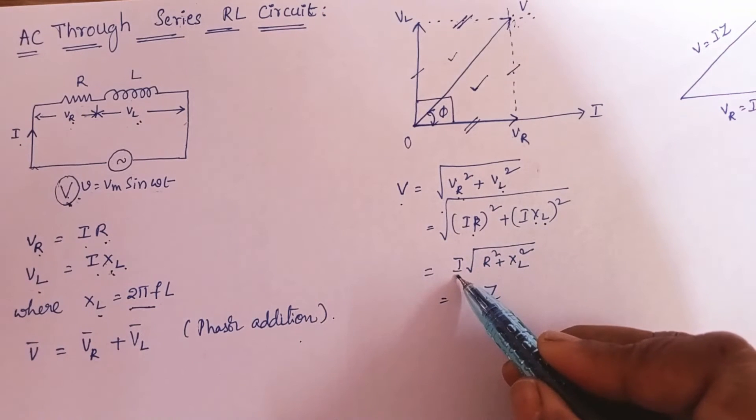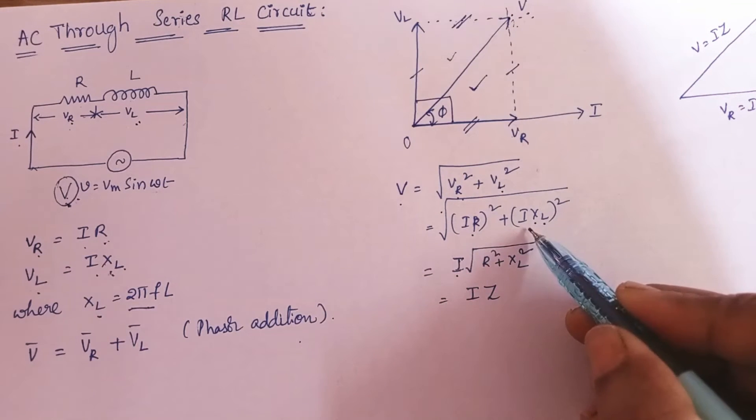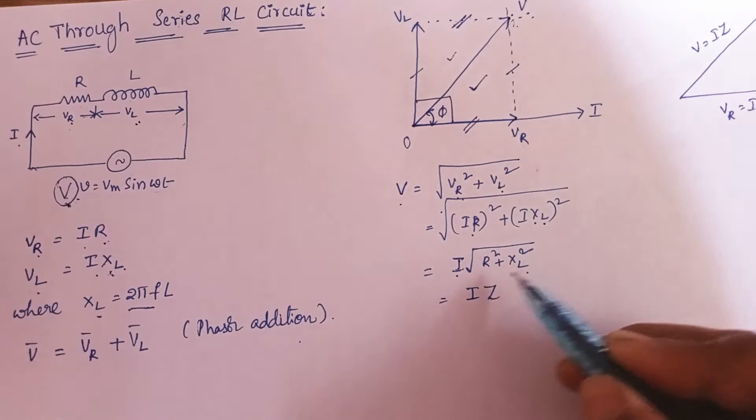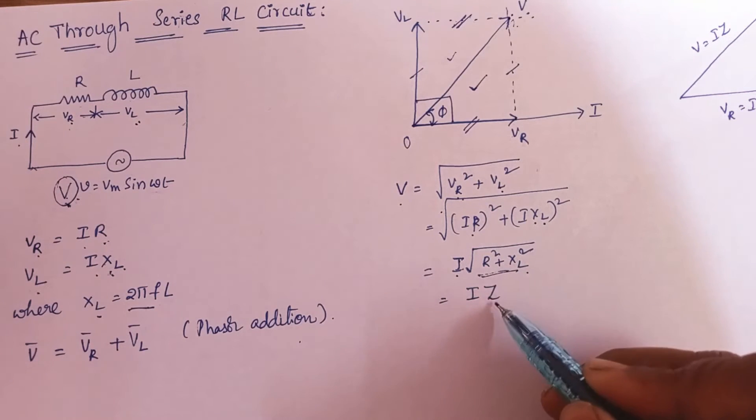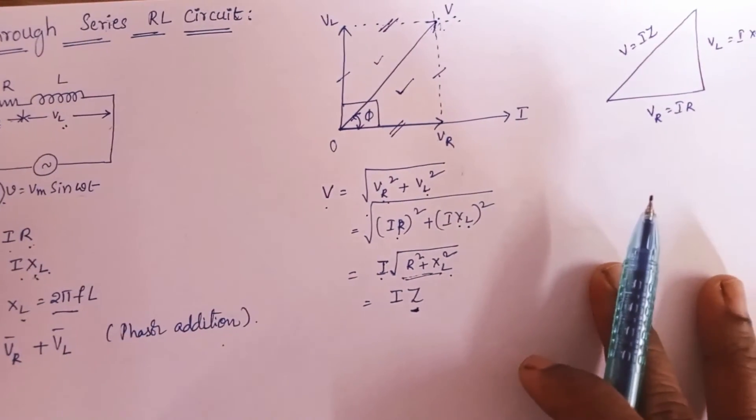So with the simple simplification, you can take current I as out because that is common for both terms. So left over is root of R square plus XL square. So this value is nothing but your impedance. I will tell you how you got this relation.